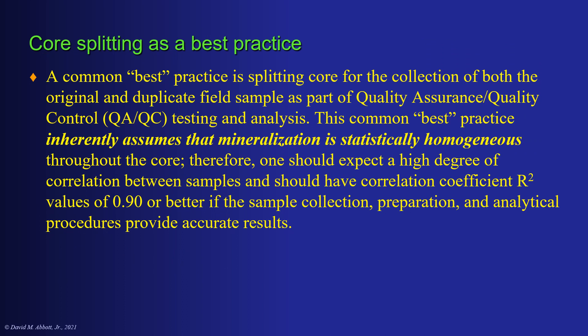Core splitting is a common best practice for the collection of both the original and duplicate field samples as part of a quality assurance and quality control testing and analysis program. This best practice inherently assumes that mineralization is statistically homogeneous throughout the core. Therefore, one should expect a high degree of correlation between samples, with R-squared values of 0.9 or better, if the collection, preparation, and analytical procedures are accurate.